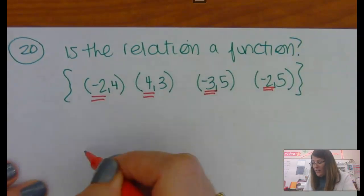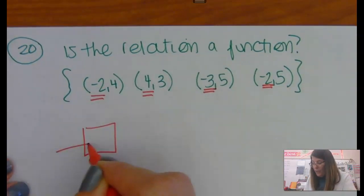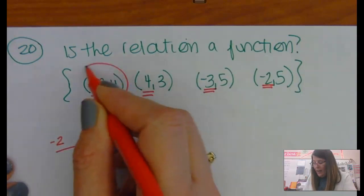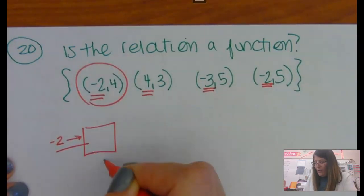So this is kind of like a machine. I go up to the machine, and I put in a negative 2, and the machine spits out a 4.